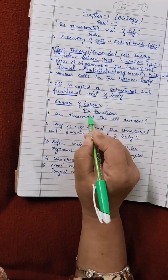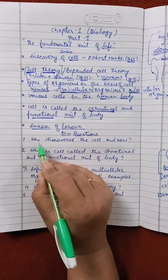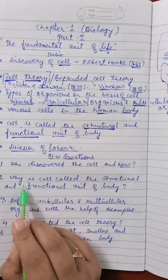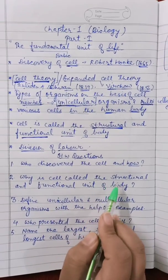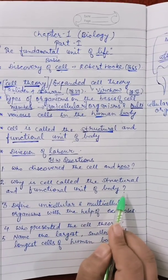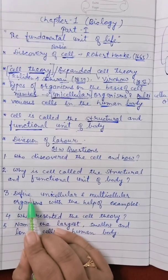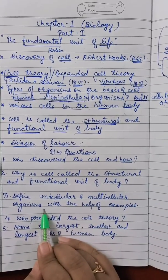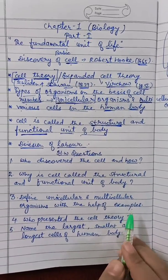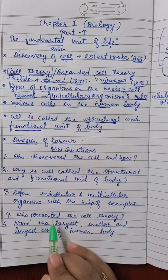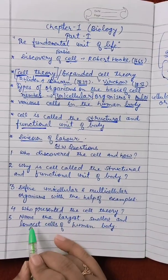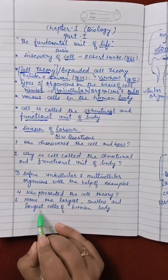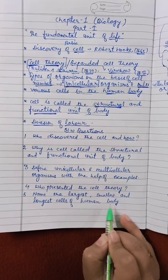Here are some homework questions. First: who discovered the cell and how? Second: why is cell called the structural and functional unit of the body? Third: define unicellular and multicellular organisms with examples. Fourth: who presented the cell theory? Fifth: name the largest, smallest, and longest cells of the human body.